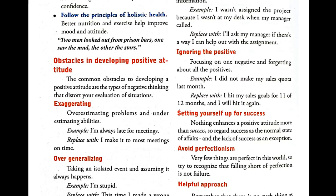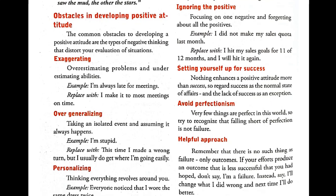Then over-generalizing: taking an isolated event and assuming it always happens. For example, saying 'I am stupid,' 'I am ignorant,' 'I don't have knowledge,' or 'I cannot control my feelings.' This happens once, but it does not happen always. So you should replace that thought — instead of labeling yourself, say 'I made a wrong turn, but I usually get where I am going easily.'